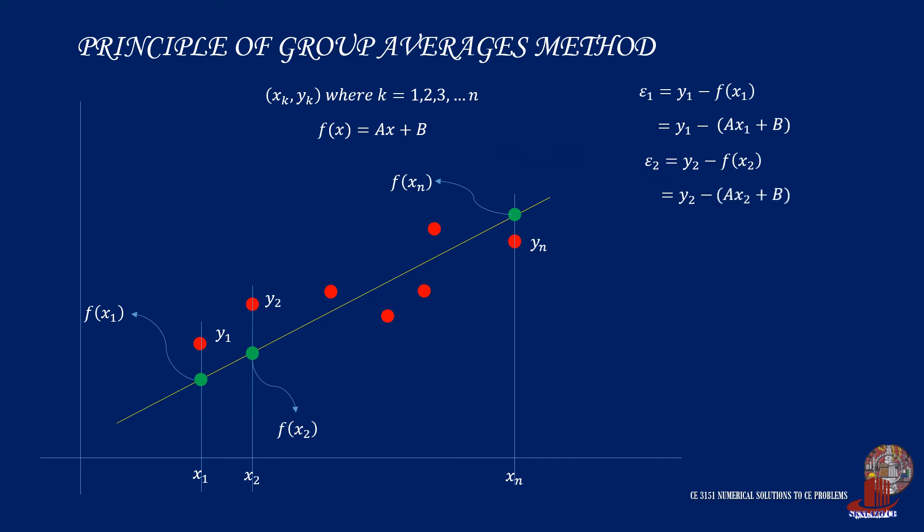What are we gonna do with these errors? In order to have the best fit line for the data set, the error should be minimized or that it should be assumed to be zero.